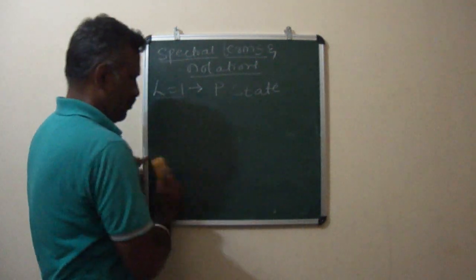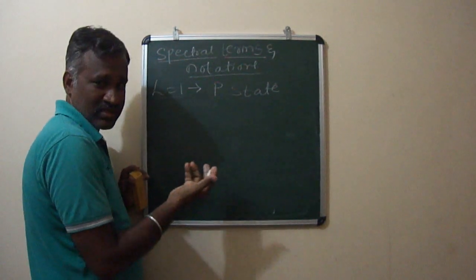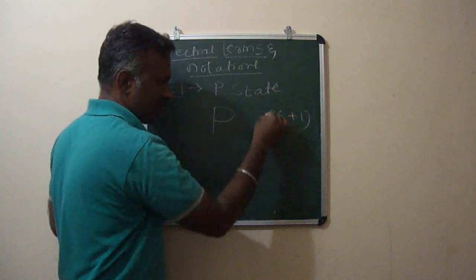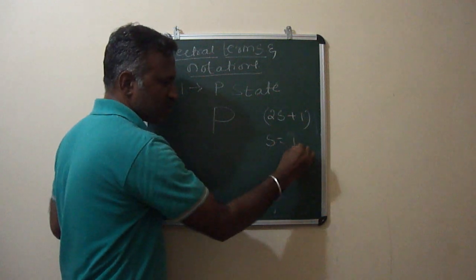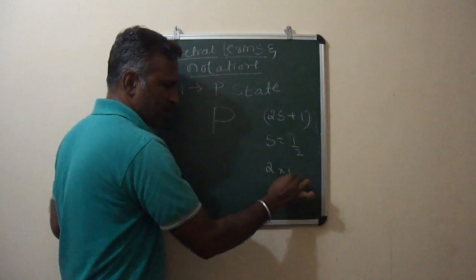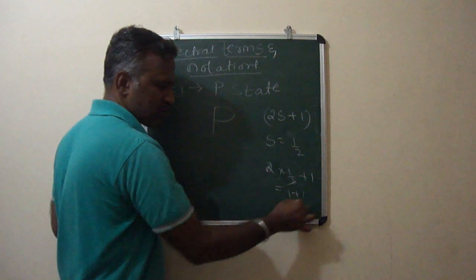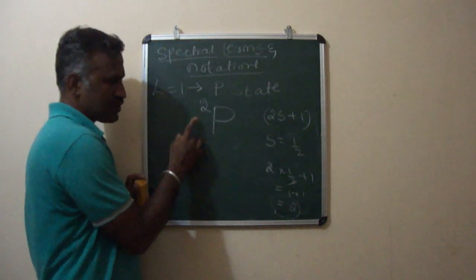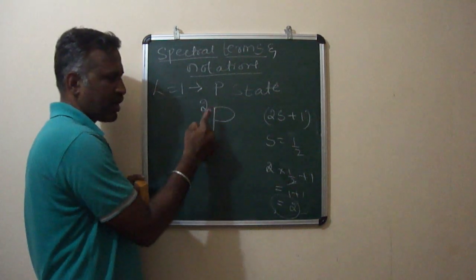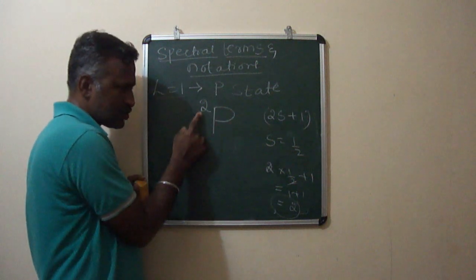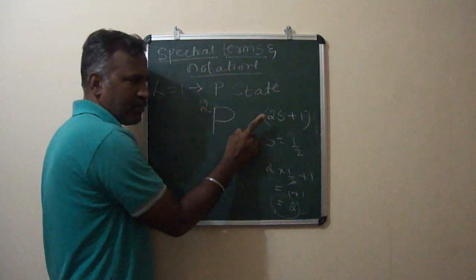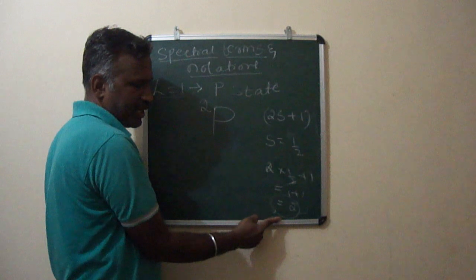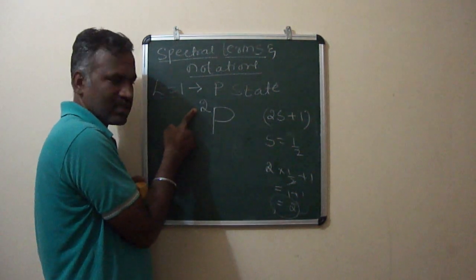The superscript is 2S plus 1, the multiplicity. If I take S equals 1/2, then the multiplicity will be 2 times 1/2 plus 1, which equals 2. This multiplicity of 2 is written as the superscript. Since multiplicity is 2, this represents the doublet state.